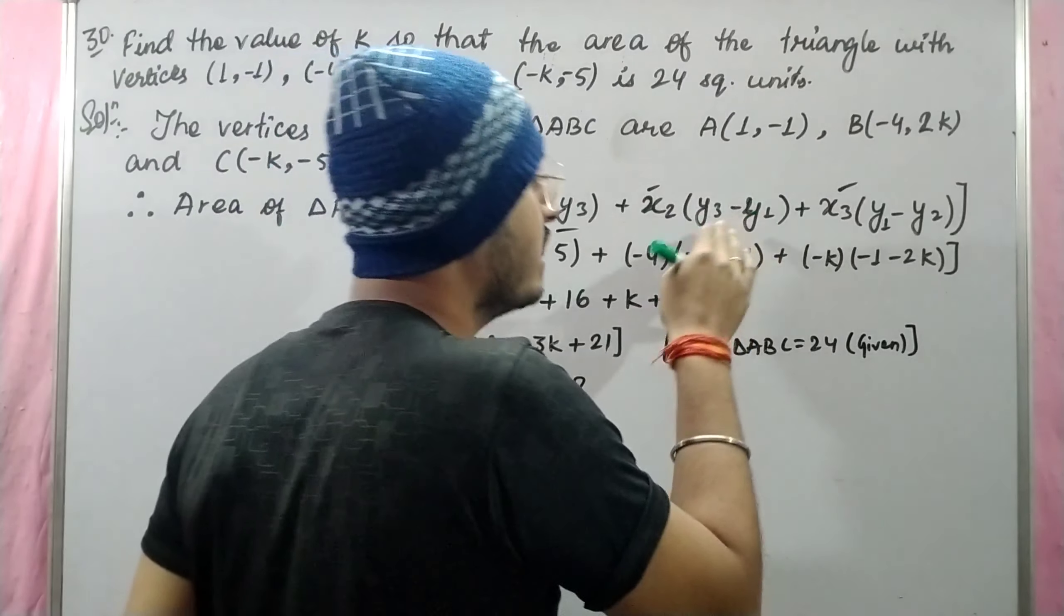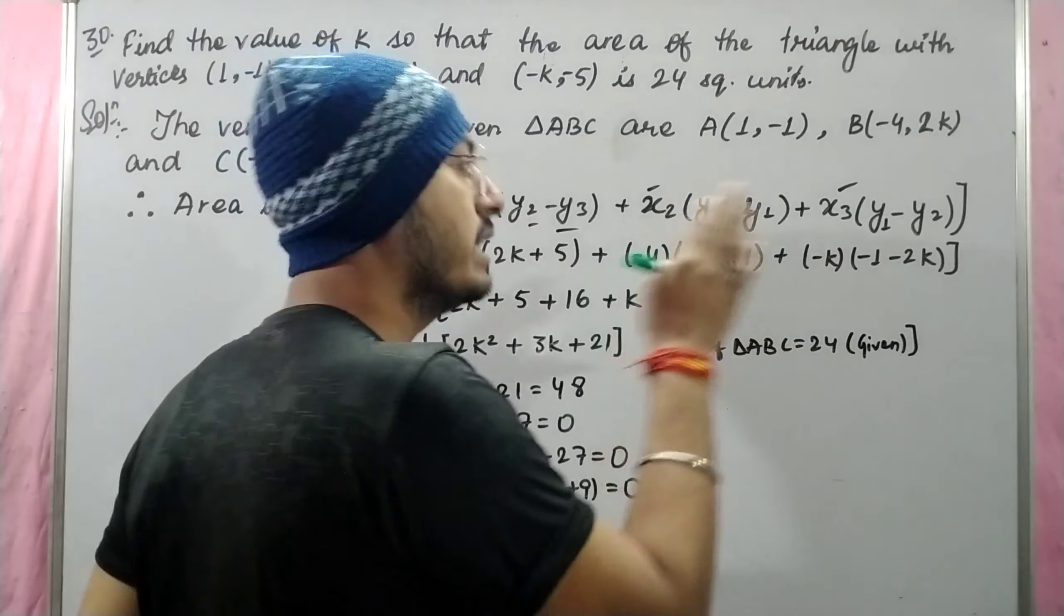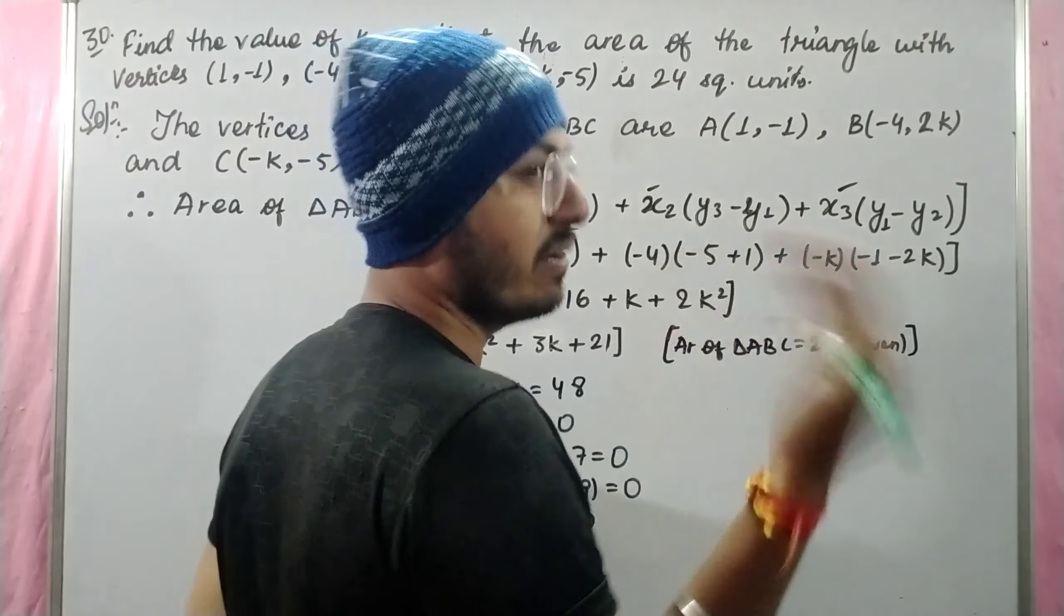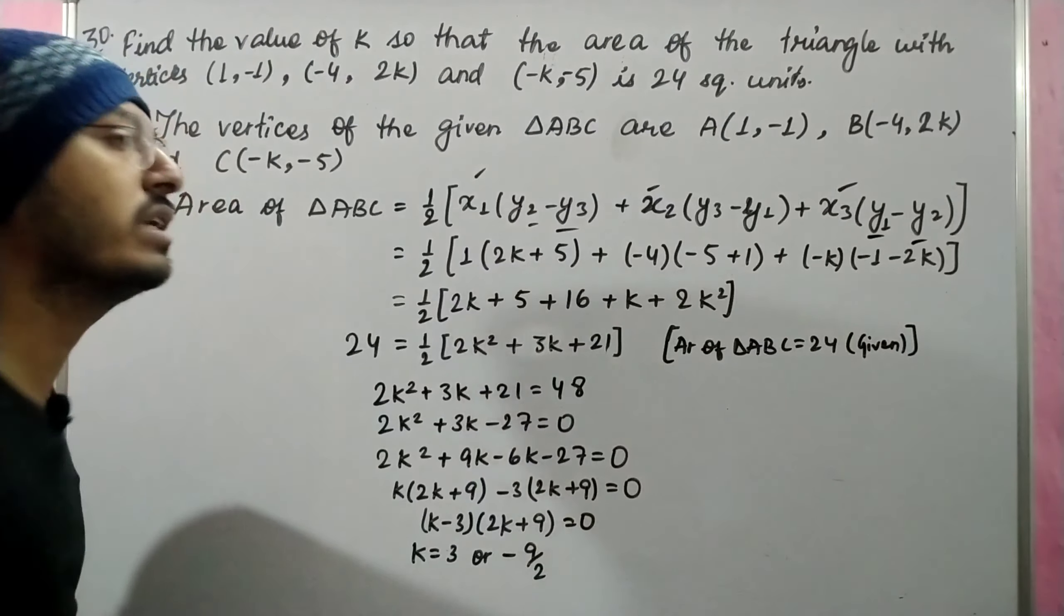After x2 comes y2, then x3, then y3. Then we write them again: 1 will be written, 2 will be written.